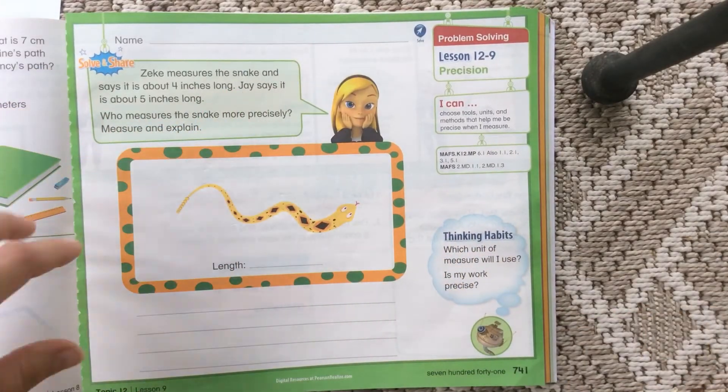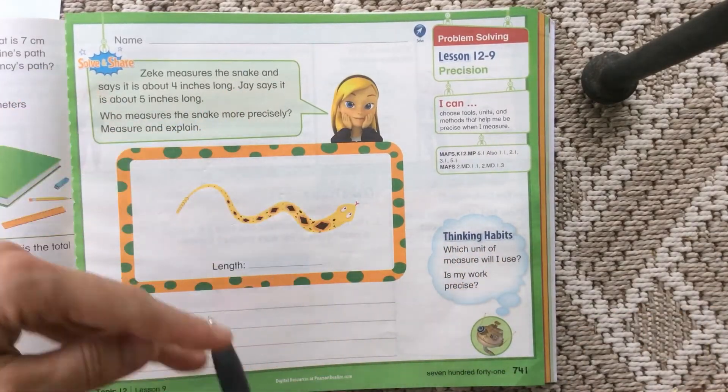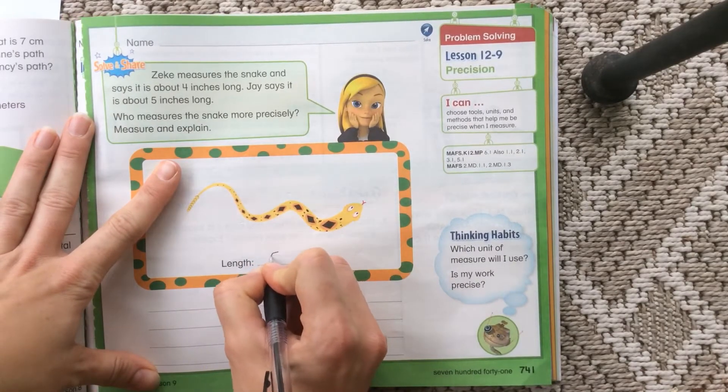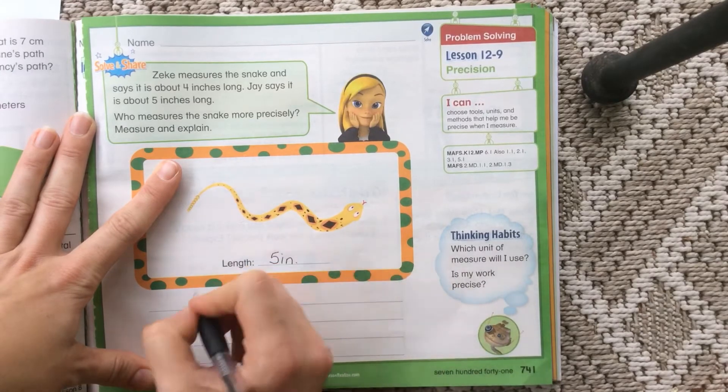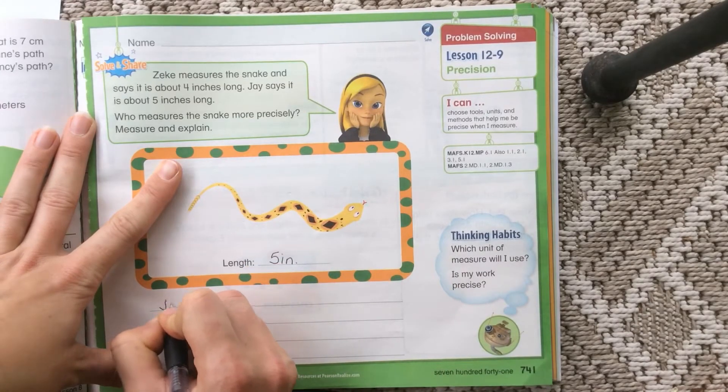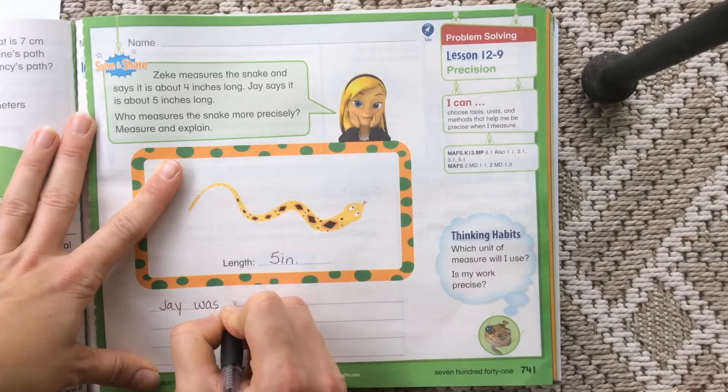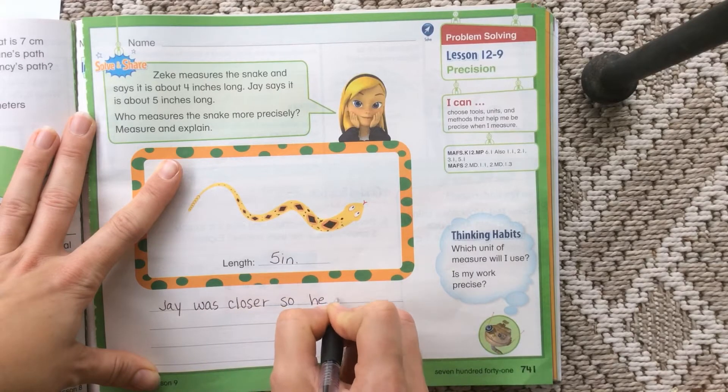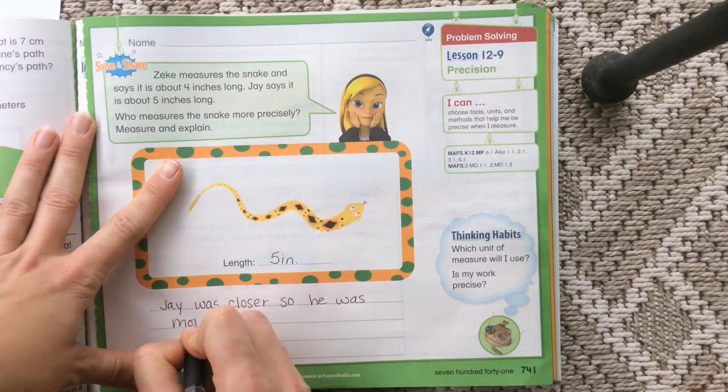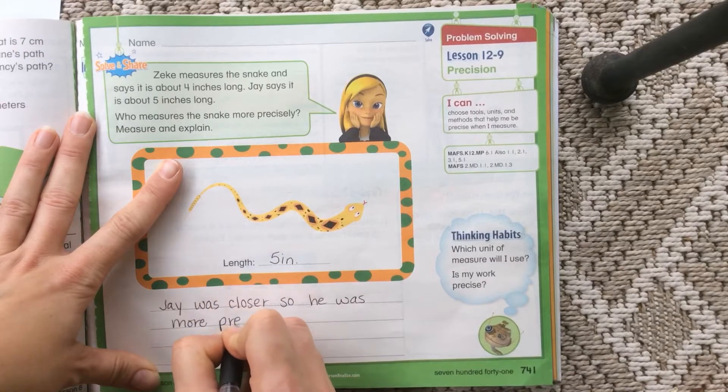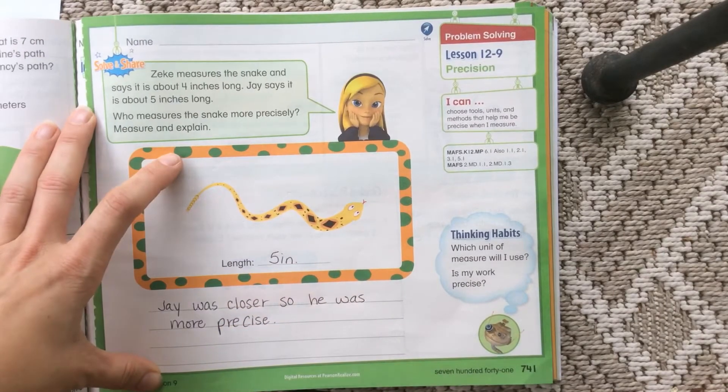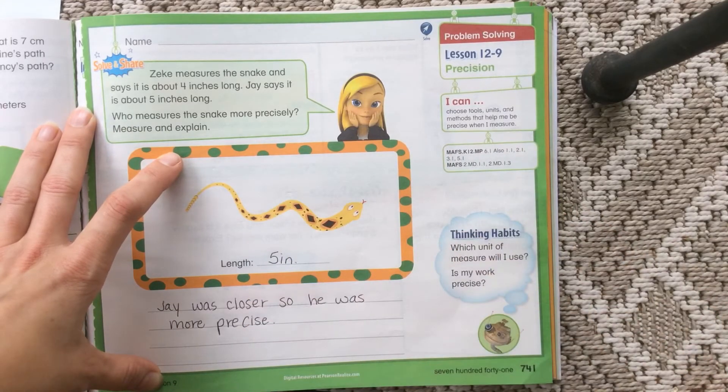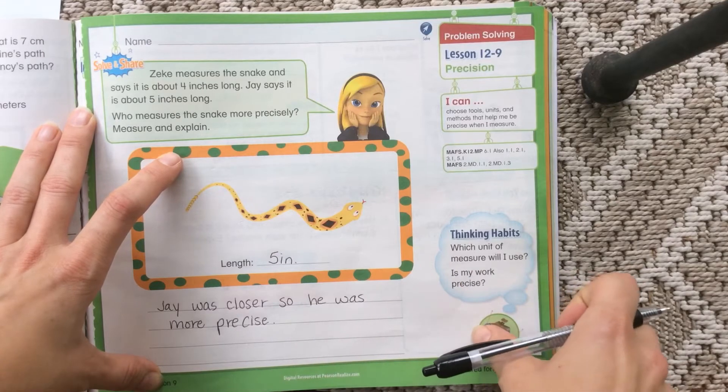So it looks like J, who said it was about five inches long, is more precise. So it says length. We can write it's about five inches. It's a little bit more, but that's okay. And we can say J was closer, so he was more precise. I wonder what made J more precise. I wonder if he also measured with a chord like we did or if he did something else that helped him to be precise.